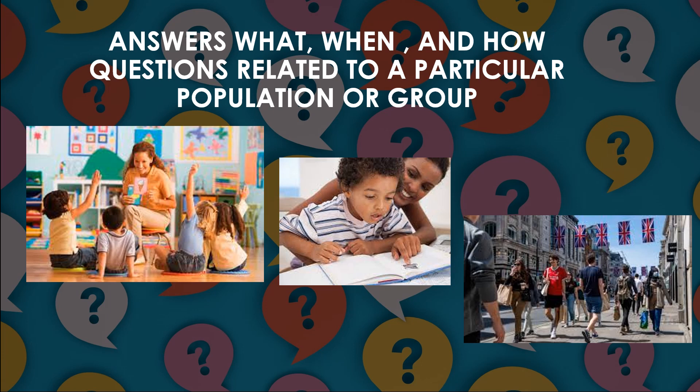Descriptive research primarily focuses on describing the nature of a demographic segment without focusing on why a particular phenomenon occurs. It describes the subject of the research without covering why it happens. For example, what is the purchasing pattern of buyers in London? But descriptive research will not cover any investigation into why this pattern exists. Understanding the nature of the market is the study's main goal. Normally, one variable is investigated, although more than one can also be explored.